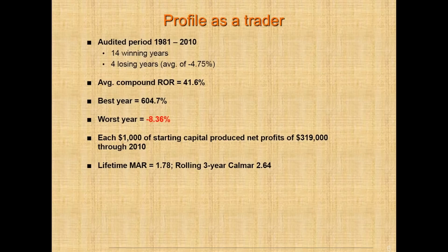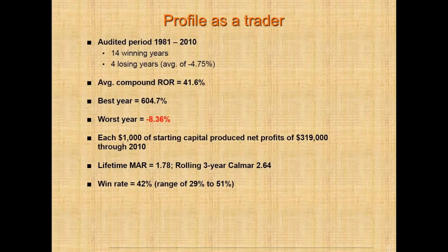The numbers I'm most proud of as a trader are my lifetime MAR at 1.8 and rolling three-year Calmar at 2.6. I really focus much more on risk-adjusted performance than on absolute performance. Absolute performance means nothing. What good is it having compounded 41% if during the process you've had seven drawdowns of 70% each? My win rate as a trader historically has been 42%.